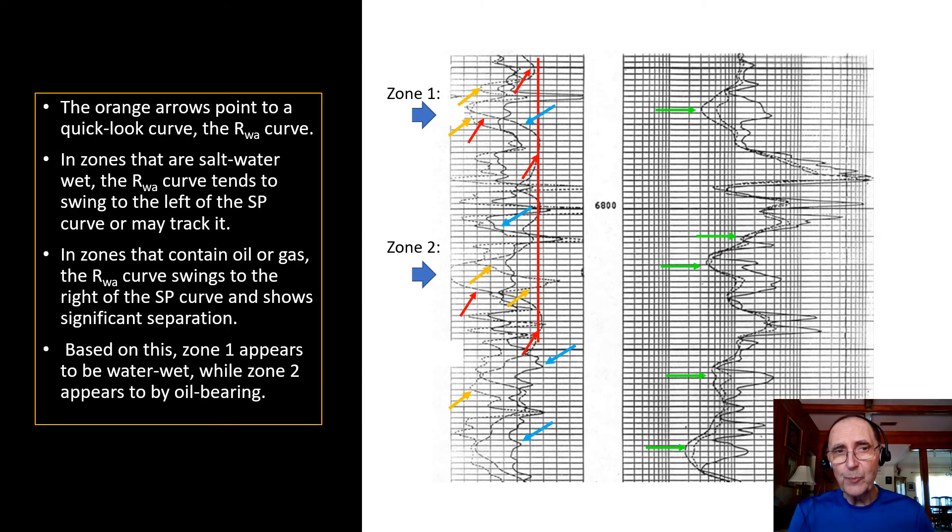The orange arrows point to a quick-look curve that we call the RWA curve. In zones that are saltwater wet, the RWA curve tends to swing to the left of the SP curve, or it may track it. In zones that contain oil or gas, the RWA curve swings to the right of the SP curve and shows significant separation. Based on what I said, it appears that zone 1 is water-wet, while zone 2 appears to be oil-bearing.